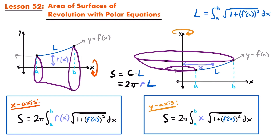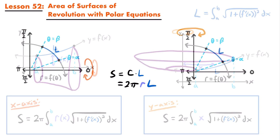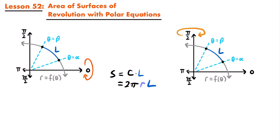Now we can apply this same process within the polar coordinate system for polar curves represented by polar equations. Looking at this graph, we are working within the polar coordinate system with our polar axis and vertical axis θ = π/2. We have a curve represented by polar equation r = f(θ), and we take a particular section of that polar curve — an arc length of L between two angles of theta, θ = α and θ = β.